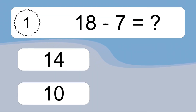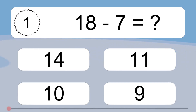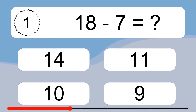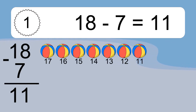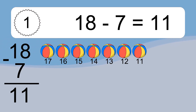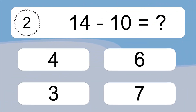18 minus 7 equals what? 18 minus 7 equals 11. Let's count it! 17, 16, 15, 14, 13, 12, 11.